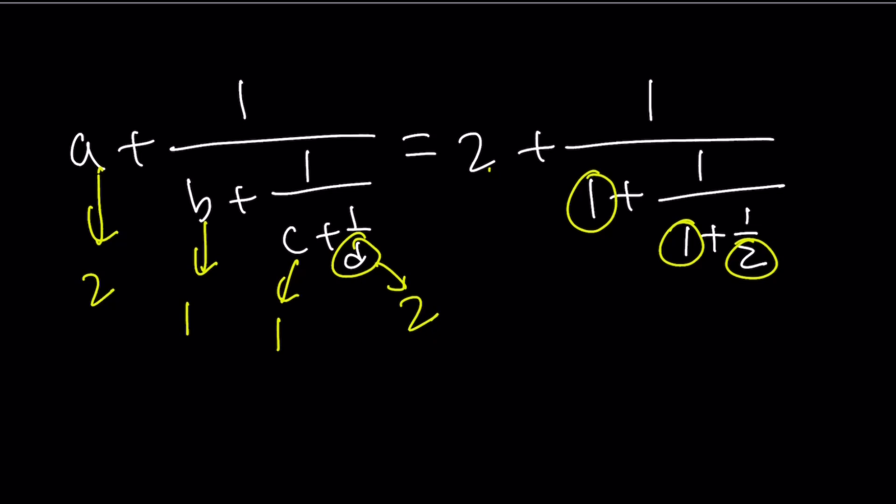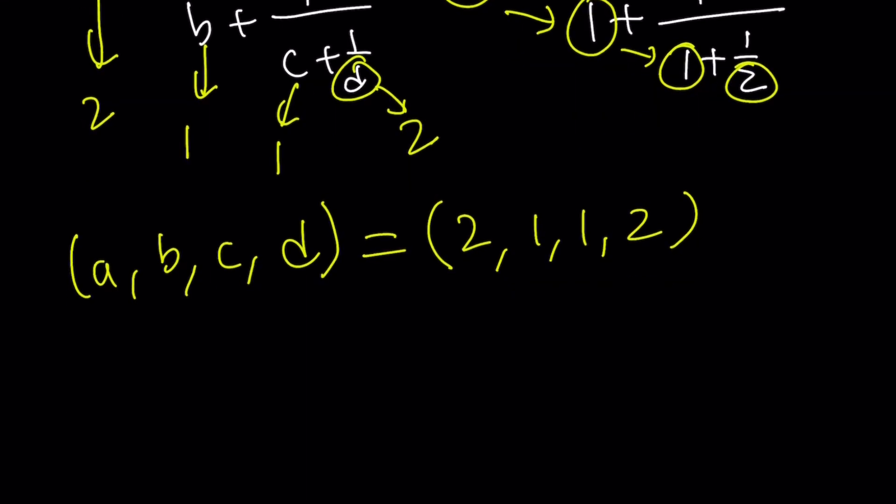So I got my values: A, B, C, D equals 2, 1, 1, 2. The answer is 2, 1, 1, 2 if you're going this way. Now, the problem didn't ask for anything specific. It was just giving you an equation. But the question could be something like, what is A plus B plus C plus D? You know, you can find it. Once you find A, B, C, D, you can find everything.